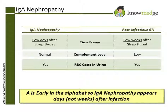This patient developed cola-colored urine with RBC casts and protein present, along with a normal serum complement level, less than one week after a sore throat, making choice A, IgA nephropathy, the most likely diagnosis.